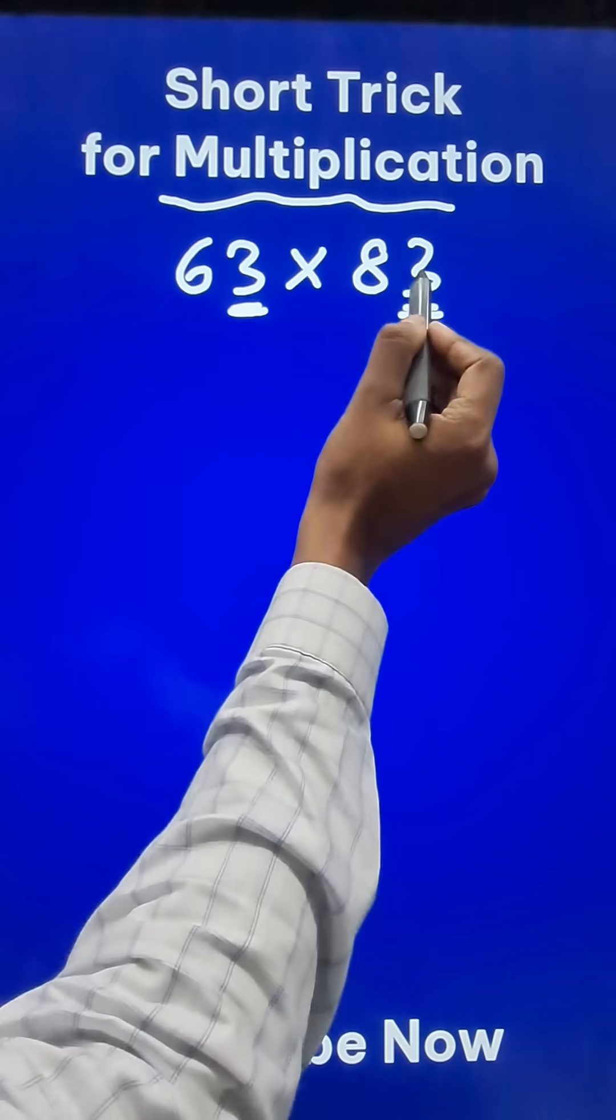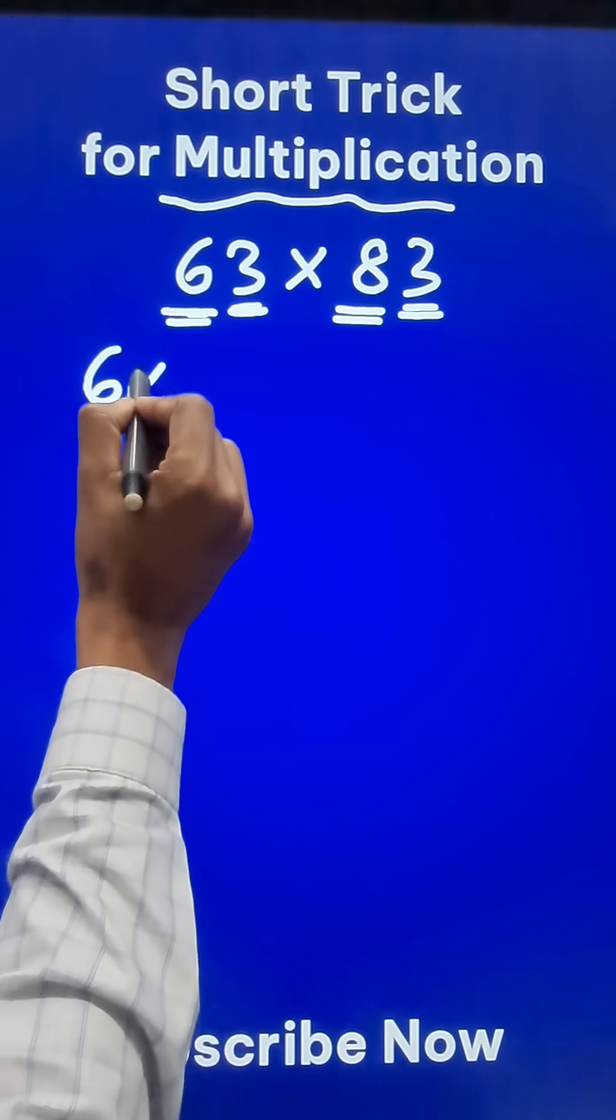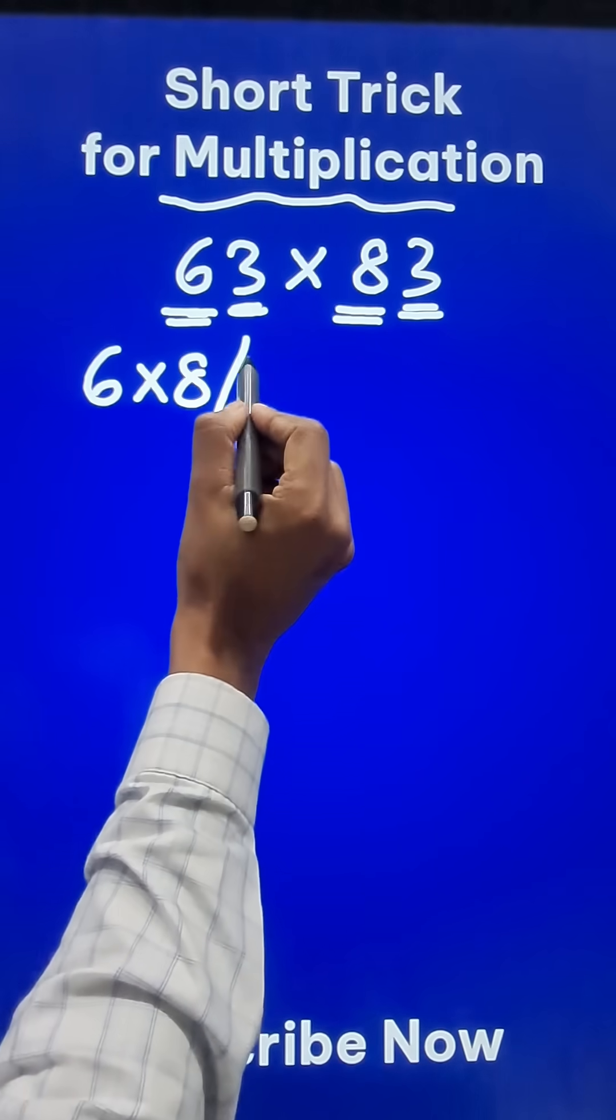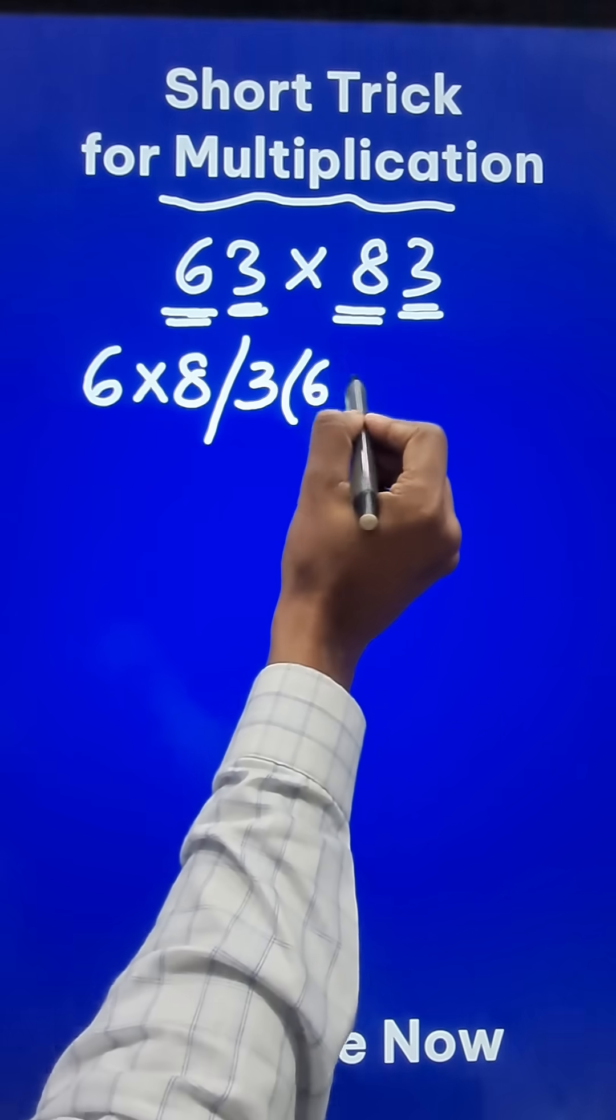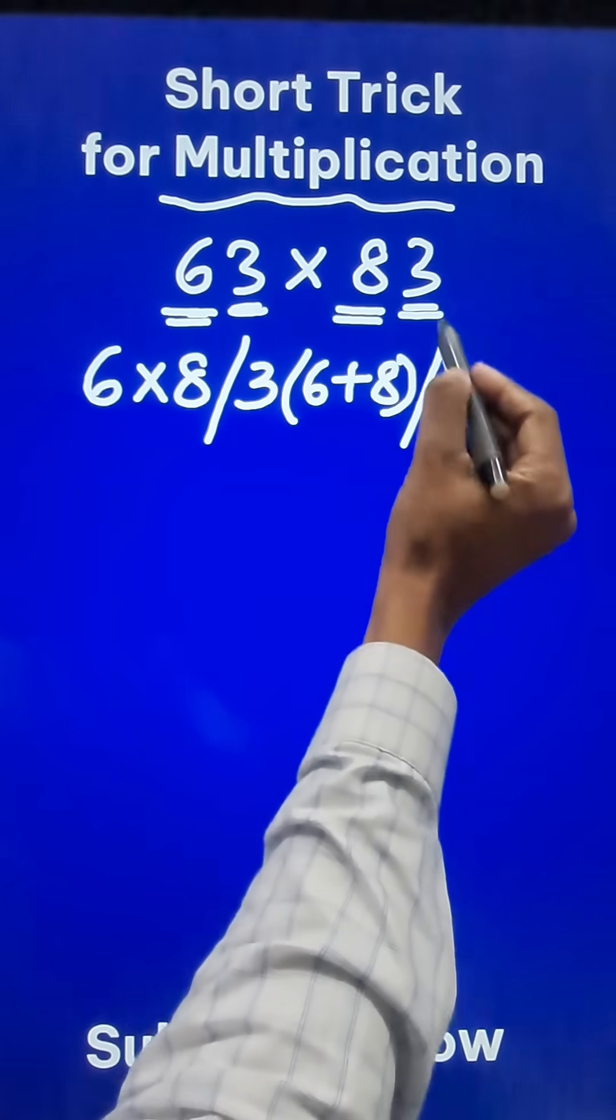Now watch. Apart from the 3's, you have a 6 here and an 8 here. So just multiply 6 and 8, then do 3 times their sum, 3 times 6 plus 8, and finally write 3 times 3 which is 9.